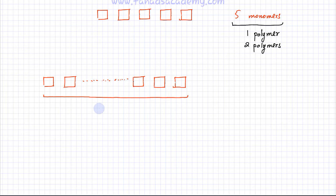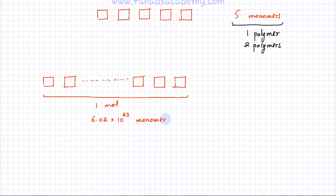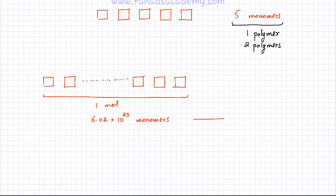Now, what if instead of five monomers you had one mole of monomers? One mole of monomers is equal to 6.02 × 10²³ monomers. If you have that many monomers and they all join together, linking with each other, you would get a very large macromolecule — exactly one macromolecule. So if they all joined together, you get exactly one polymer.